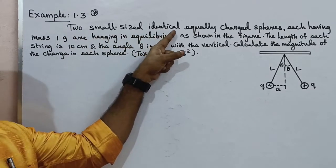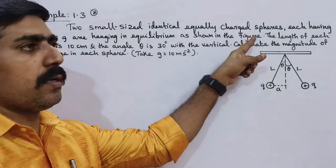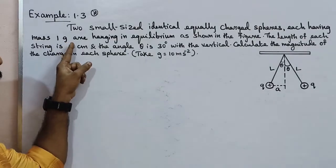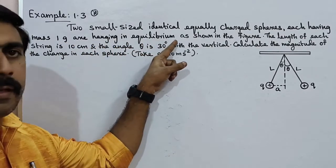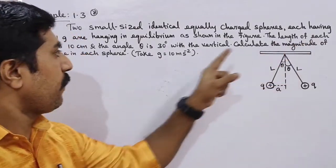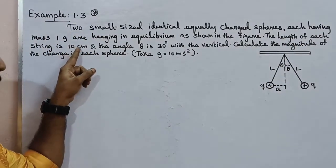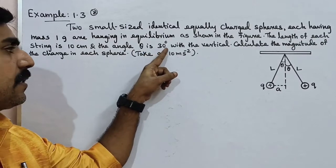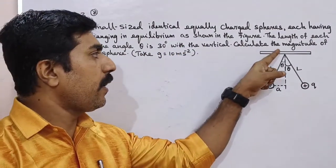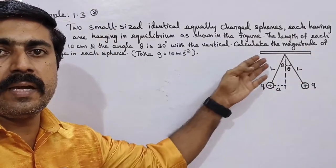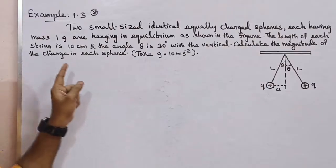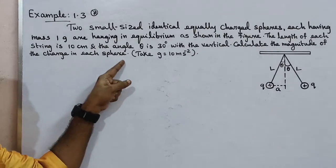Two small sized identical equally charged spheres, each having mass 1 gram, are hanging in equilibrium as shown in the figure. The length of each string is 10 centimeter and the angle theta is 30 degrees with the vertical. Calculate the magnitude of the charge in each sphere.